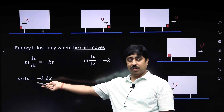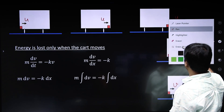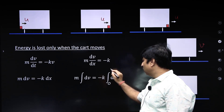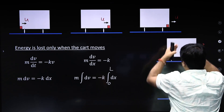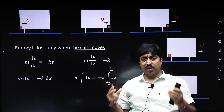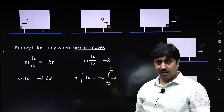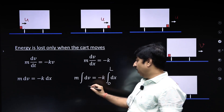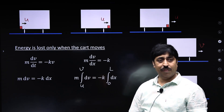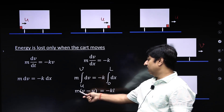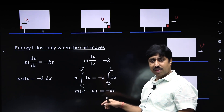Separating variables: m dV = -k dx. Integrating with limits — velocity changes from u to v as the cart covers distance 0 to l — we get m(v - u) = -kl.